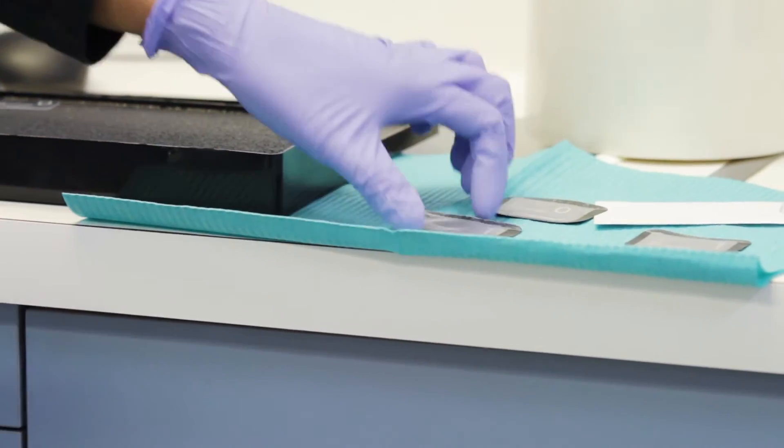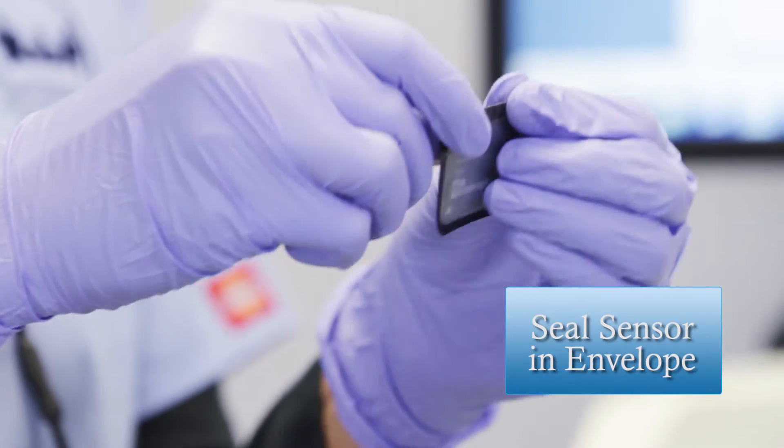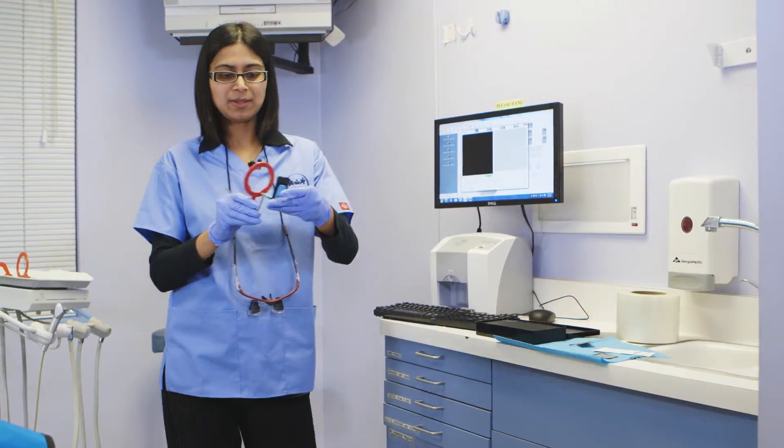Insert the relevant PSP flexible sensor into the barrier envelope, seal, and then place in the patient's mouth.